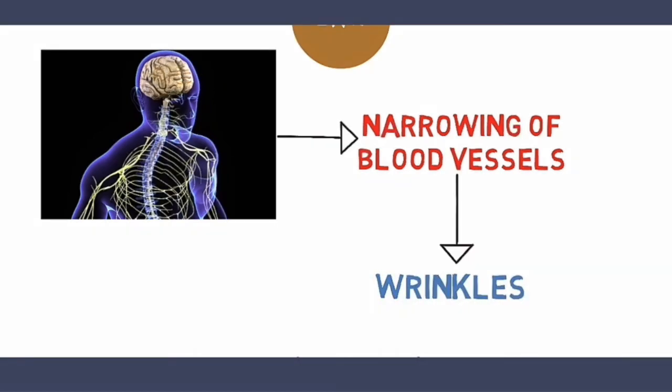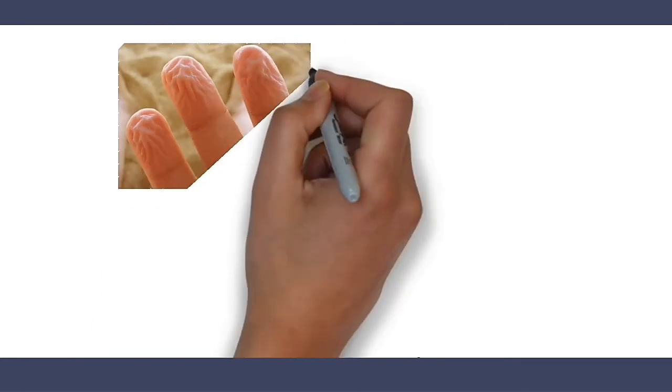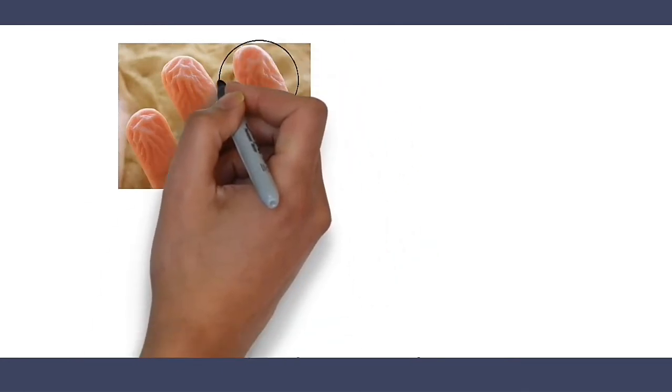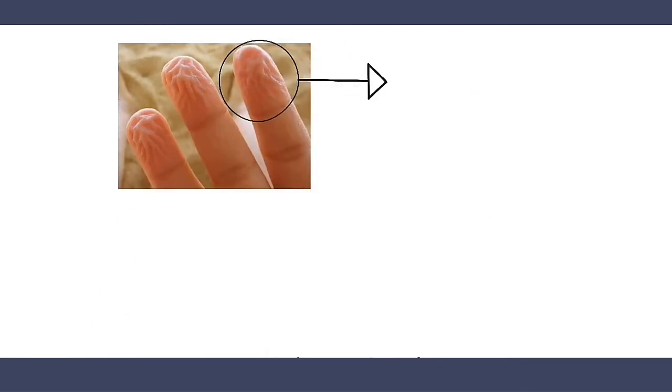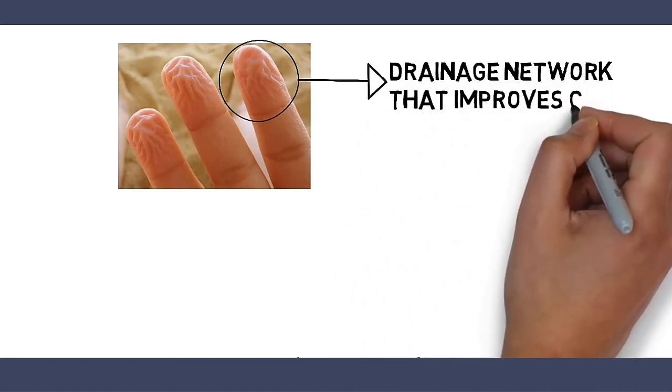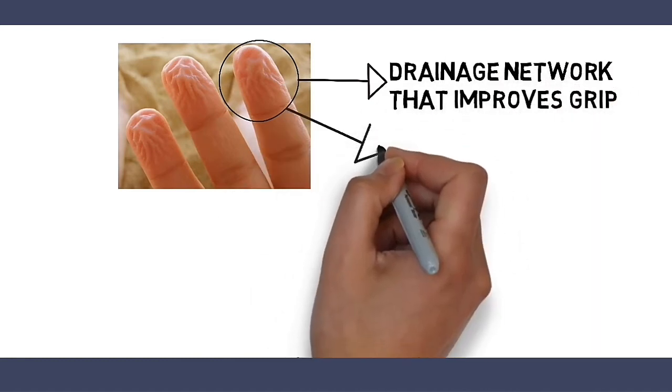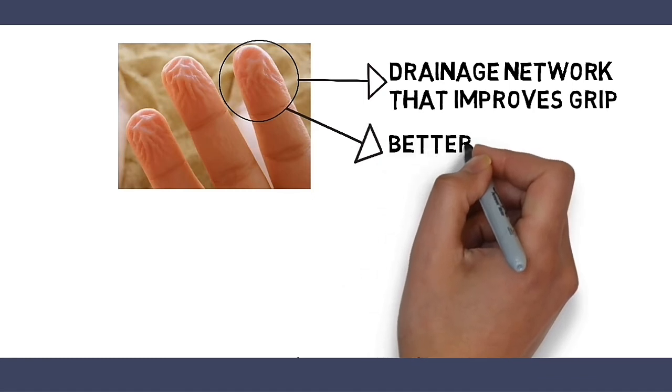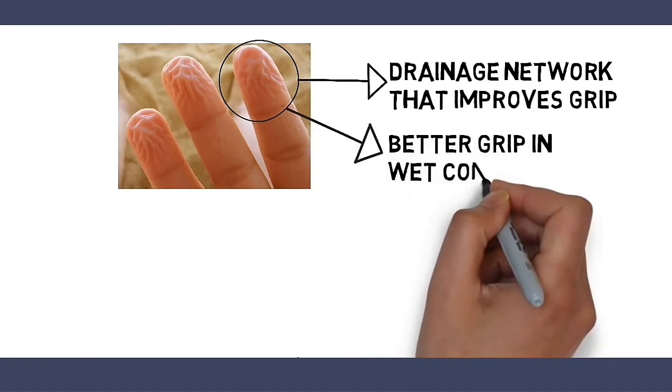That's not all. The wrinkles on our fingers actually serve as a drainage network that improves grip. According to research, wrinkled fingers enable better grip in wet conditions.